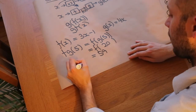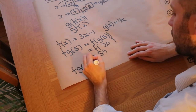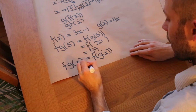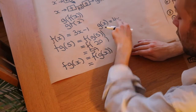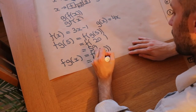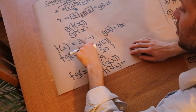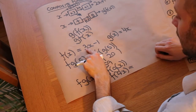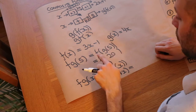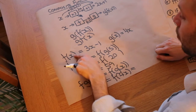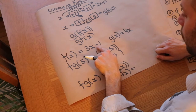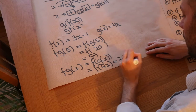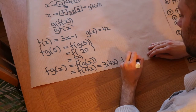More generally, what is f(g(x))? We know g(x) = 4x, so we do f(4x). Since f(x) = 3x − 1, we replace x with 4x to get 3 times 4x minus 1, which simplifies to 12x minus 1.